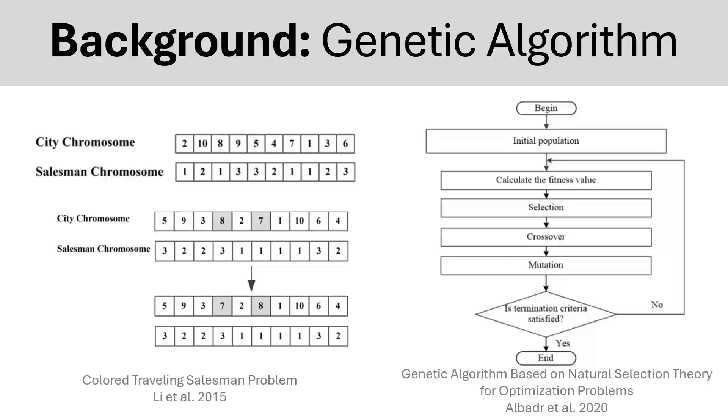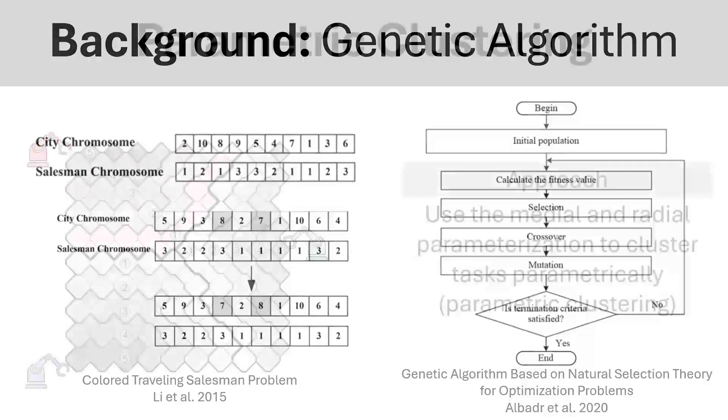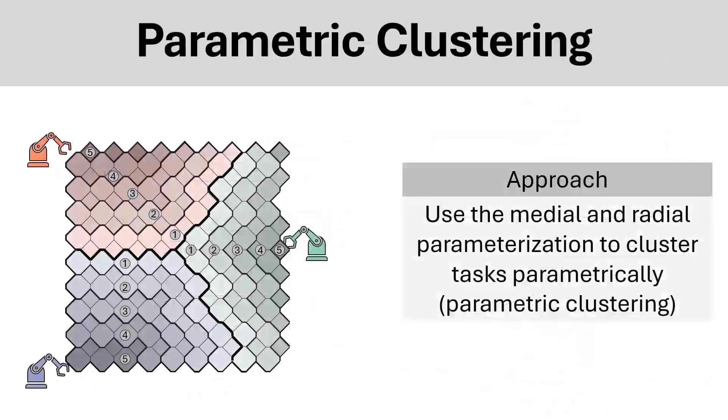In order to do this, we will set up a representation for a schedule, and then how modification of that schedule occurs in order to arrive at an optimal sequence. Our approach is to use the medial and radial parameterizations to cluster tasks parametrically, which we call parametric clustering. By using the parameterization, we are able to better understand the space that we are optimizing within, without having to optimize every single cell individually, which is a very difficult problem to solve.